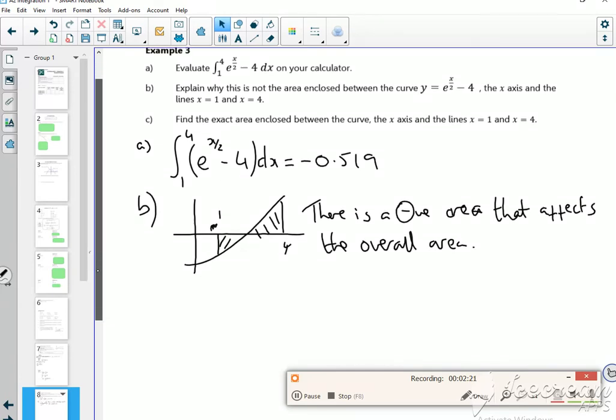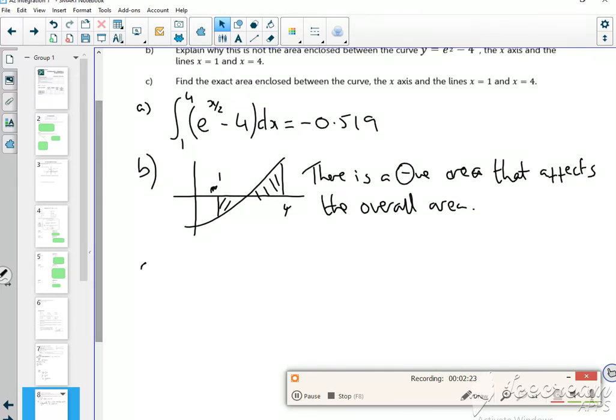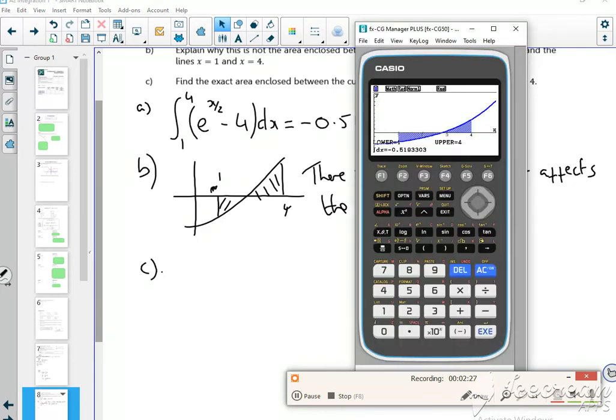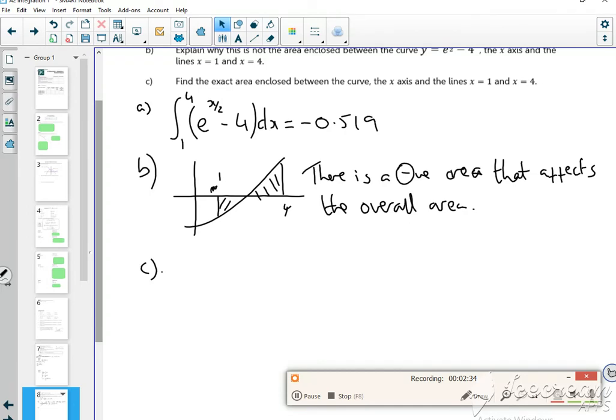So I need to split it then, don't I? If I want to do it, I need to split it. Now there's an issue here. If I use my calculator, if I do G solve and find the root, it gives me a value which isn't exact. And the calculator says exact.